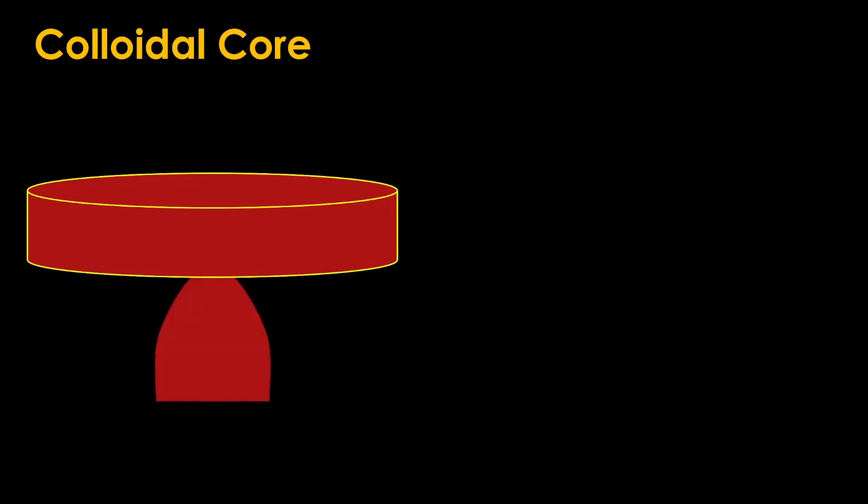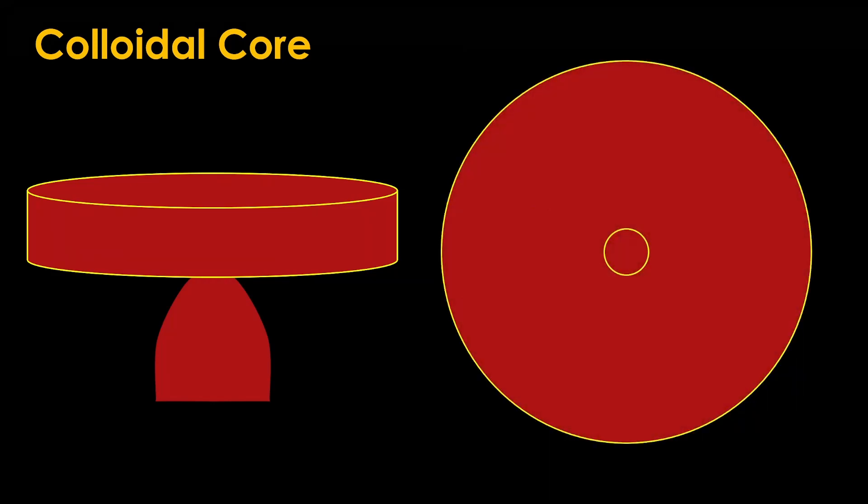Here's how the colloidal core works. You make a big chamber in the shape of a flat wheel, then you cut a hole in the bottom and attach it to a rocket nozzle. From a top view it looks like this.